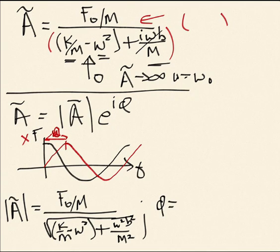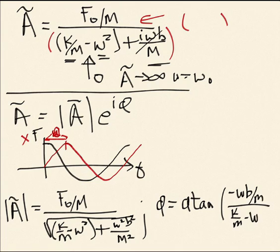And I'll write down the phase, too. And, you know, it's less important. I'll talk about the phase a little bit, but it's less important from what I want you to understand than the amplitude. So the phase is the arc tangent of the imaginary part of A over the real part of A, and that turns out to be minus omega b over m divided by k over m minus omega squared. Okay, let me stop there. I'll talk more about this in class.